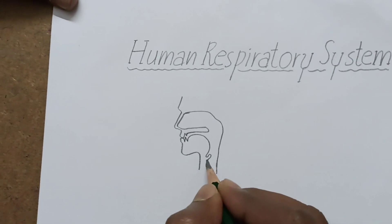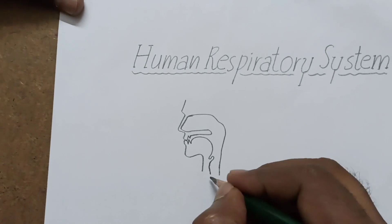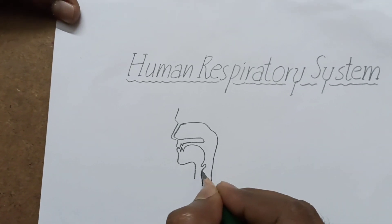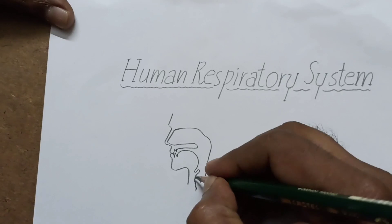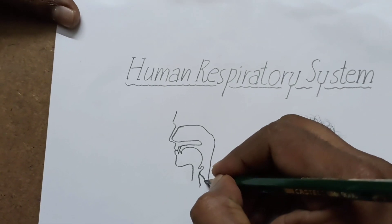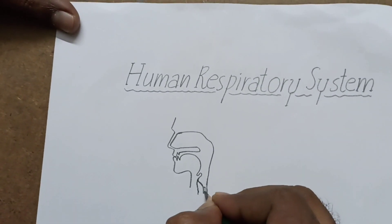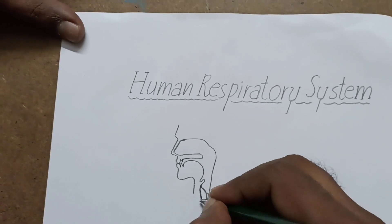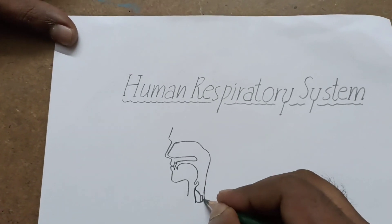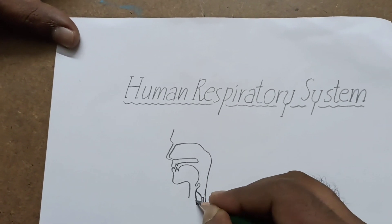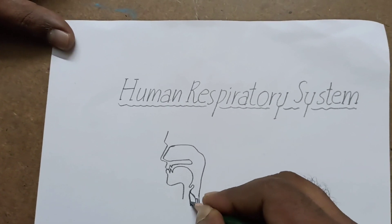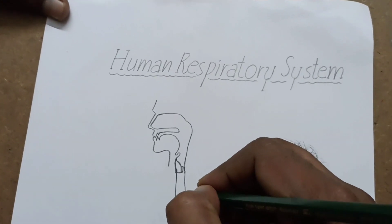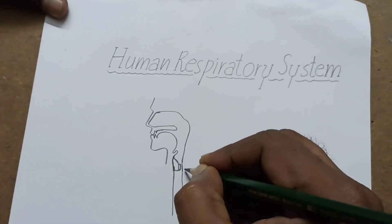Right now, below the epiglottis we have to draw the larynx like this. It is a cartilage structure — the larynx is the sound box of human beings.